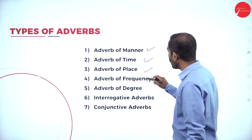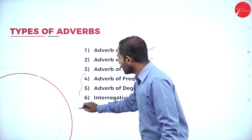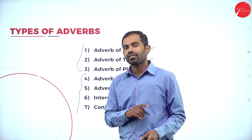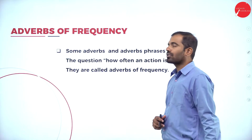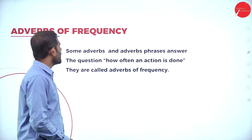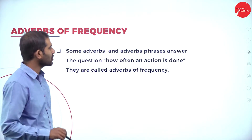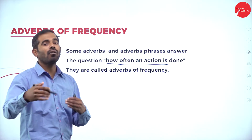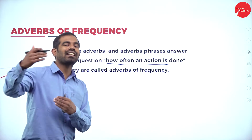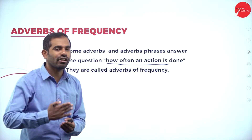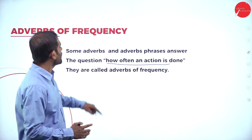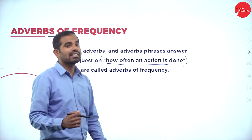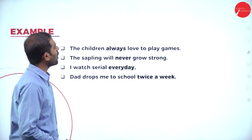In today's session I am going to discuss four more types, since I've already discussed the first three in my previous session. So what is adverb of frequency? Some adverbs and adverb phrases answer the question 'how often an action is done.' Adverb of frequency talks about how often the action is done. For example: 'The children always love to play games.'